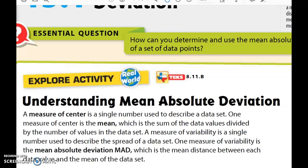A measure of center is going to be a single number which is used to describe a data set. One measure of center, as we know as the mean, also known as the average, which is the sum of the data values divided by the number of data values in a set. So basically, if I have the number one, two, and three, I have three data values. I'm going to add those up, then divide by three, which is giving me my mean.